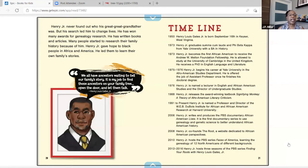Henry, Jr. never found out who his great great grandfather was, but his search led him to change lives. He has won many awards for genealogy research. He has written books and articles. Many people started to research their family history because of him. Henry, Jr. gave hope to black people in Africa and America. He led them to learn their own family stories. His favorite quote is, we all have ancestors waiting to tell our family story. It is my job to find those ancestors on your family tree, open the door, and let them talk.